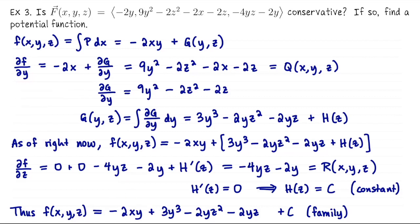So now let's put it all together. Our potential function is −2xy + 3y³ − 2yz² − 2yz + c. That gives us our entire family of potential functions. You can check your work: differentiate with respect to x — only the first term contributes, giving −2y. That checks out. Differentiate with respect to y: we get −2x + 9y² − 2z² − 2z, which matches the second component function. Then differentiate with respect to z: we get −4yz − 2y, which matches the third component function. The algorithm worked and we found our potential functions.